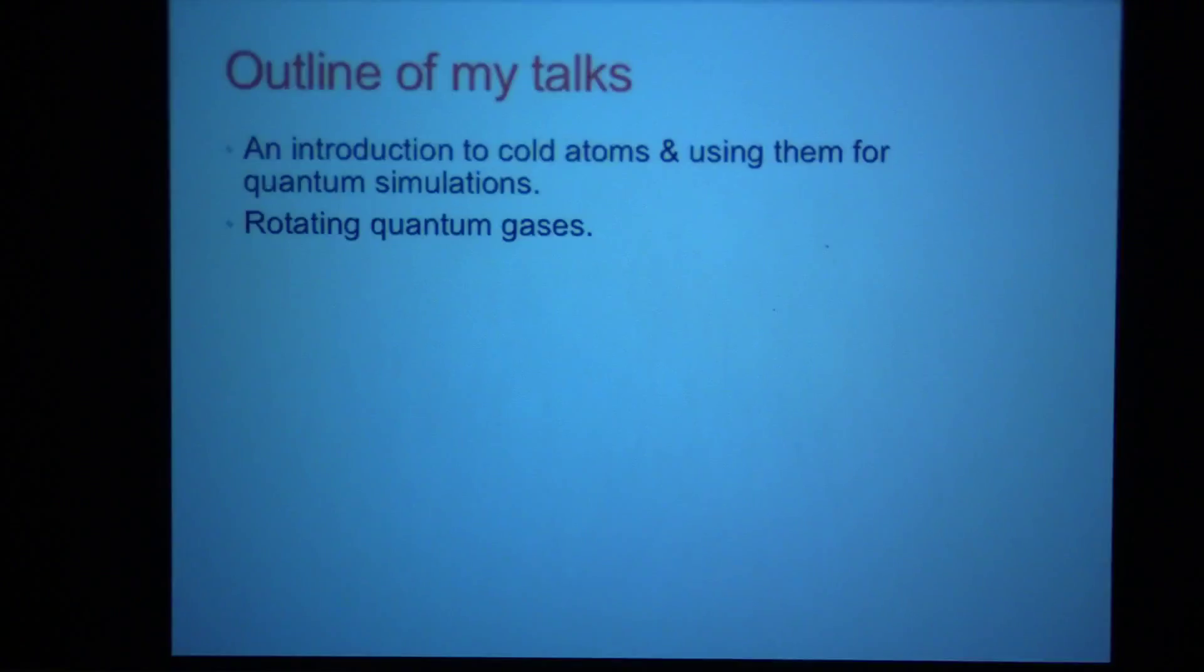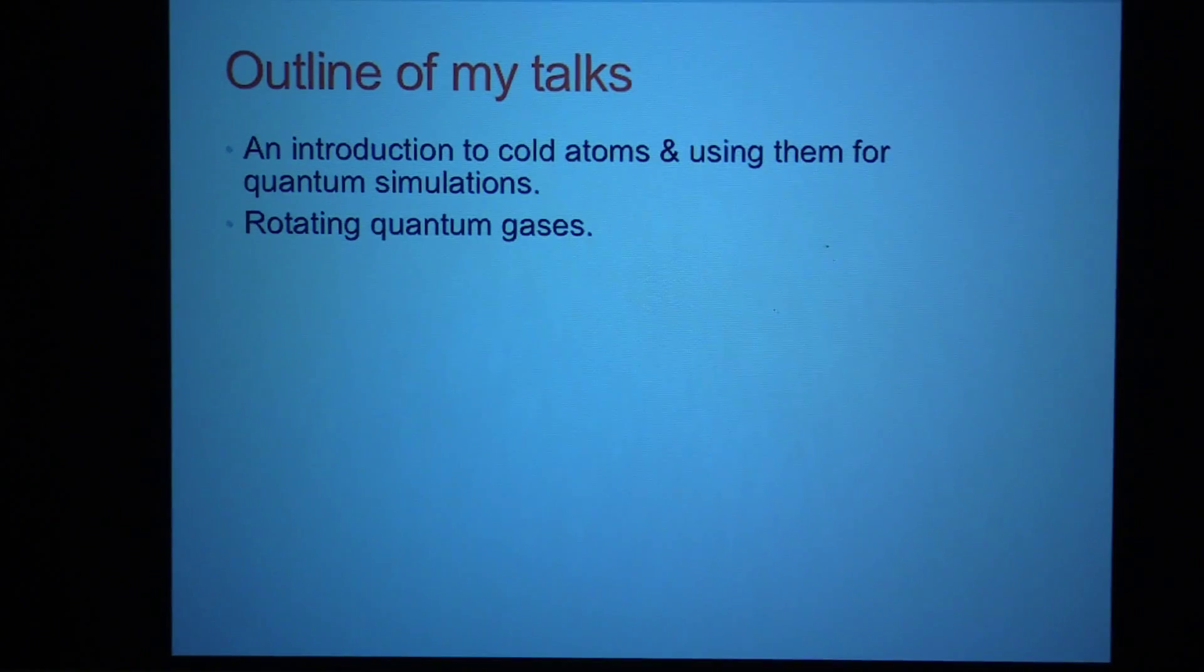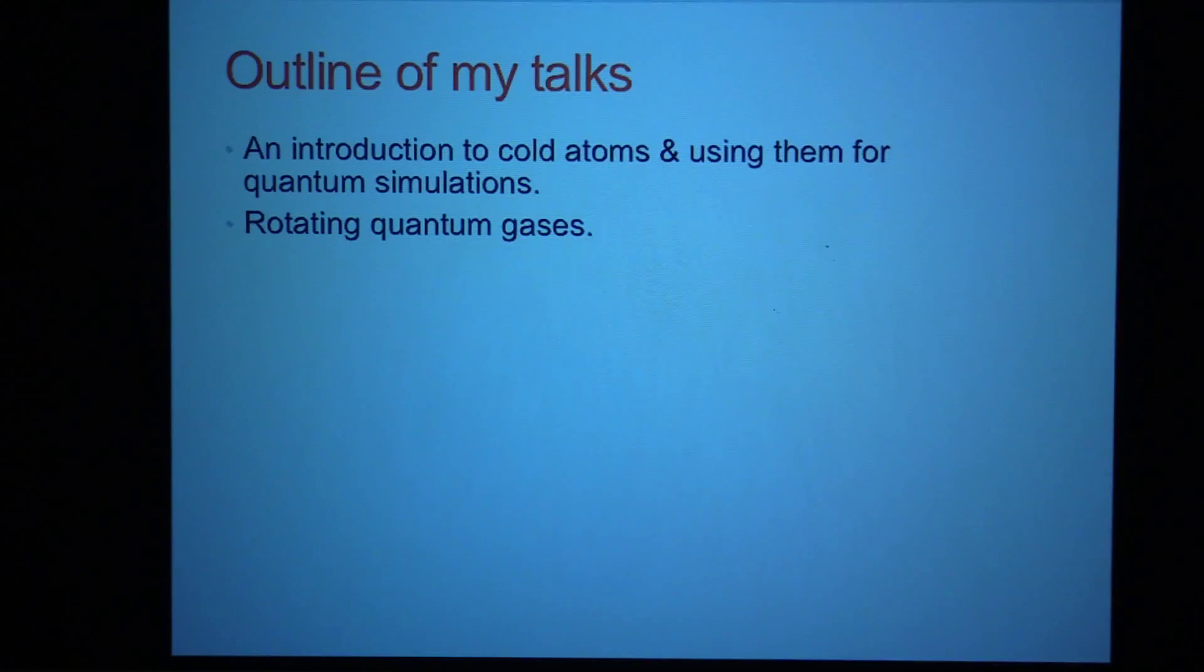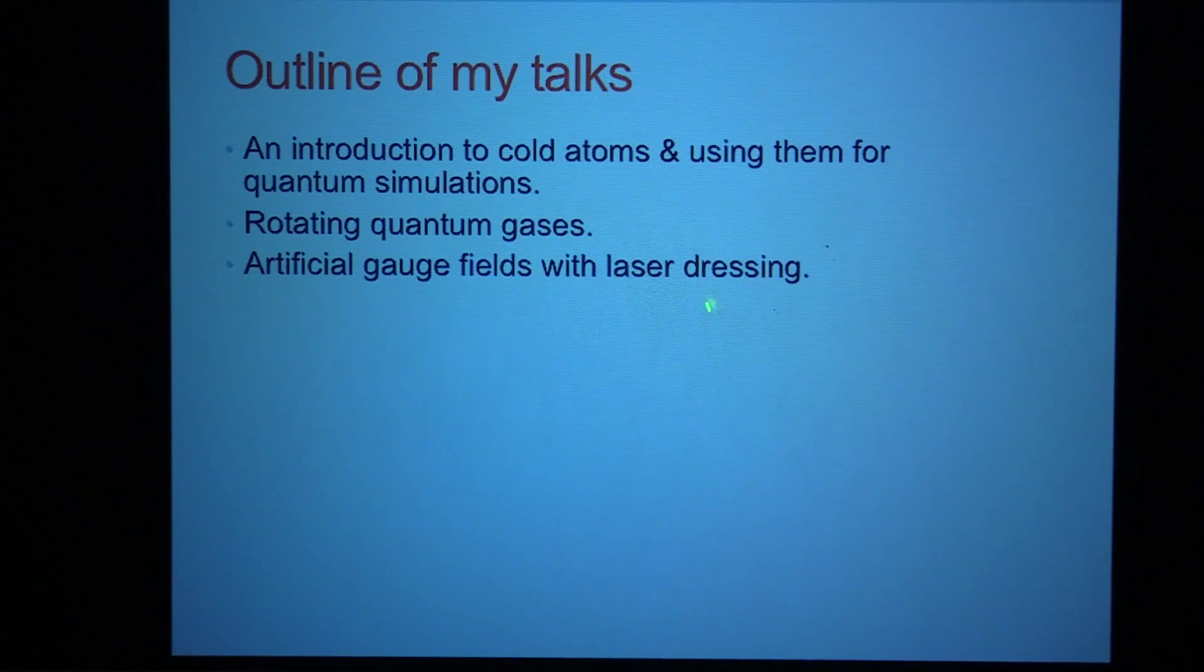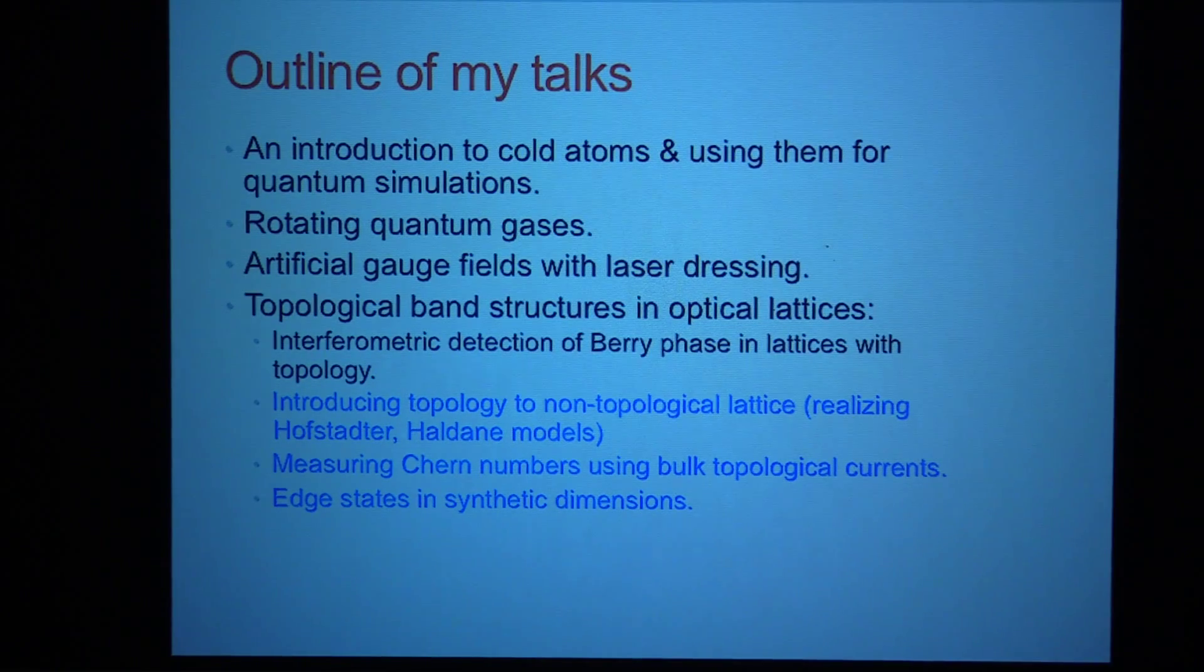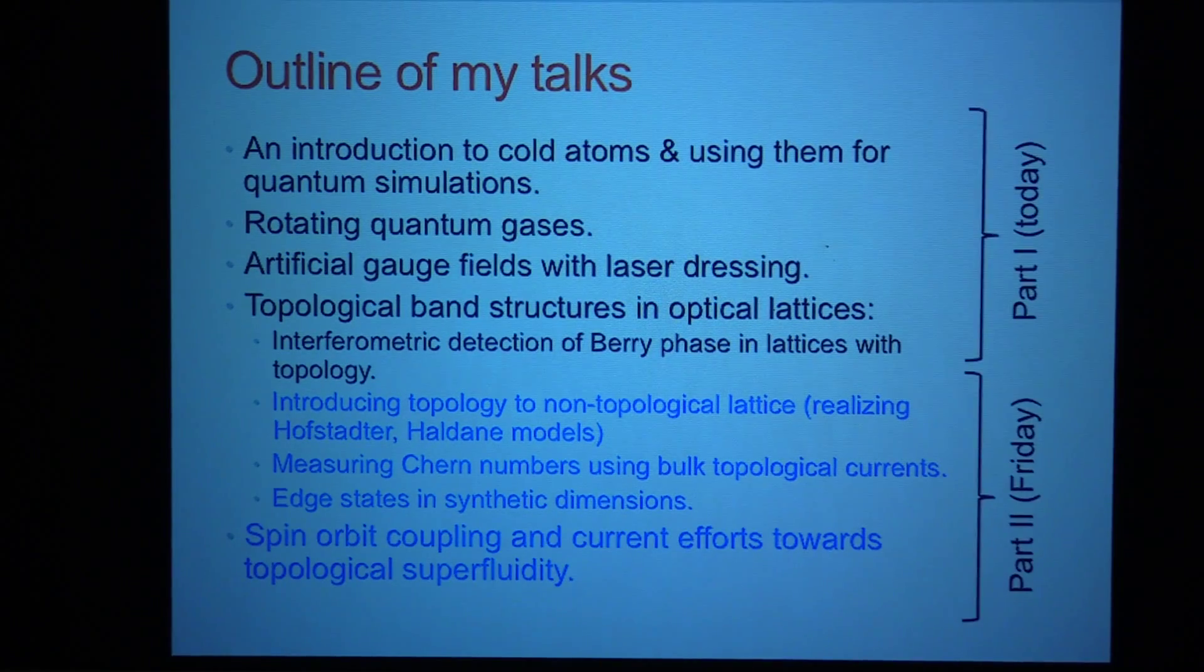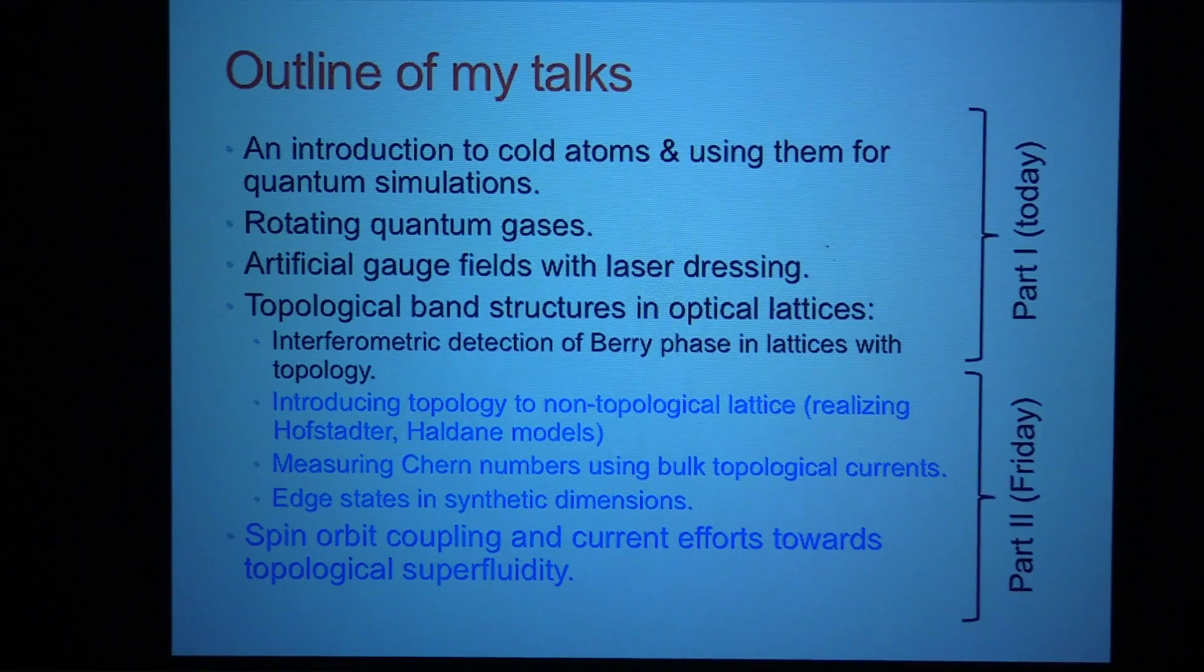And then I'll go chronologically through the different techniques that people have gone through to try to introduce topological phenomena to these systems, starting with a technique of just rotating the quantum gas, a very simple technique that people have been investigating for a while, but it turns out it runs into some problems. So they've started looking at some newer techniques recently like laser dressing and introducing optical lattices to engineer topological band structures.